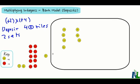You can see that in the bank, I now have 8 positive tiles. So positive 2 times positive 4 gives me positive 8. That's a positive times a positive—positive 2 times positive 4 equals positive 8.